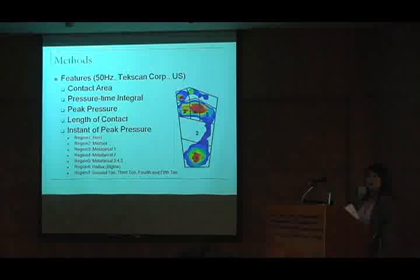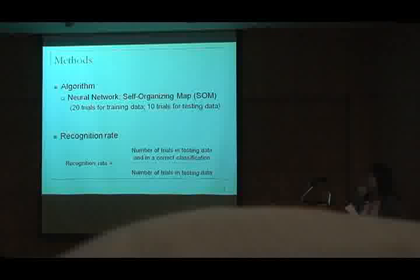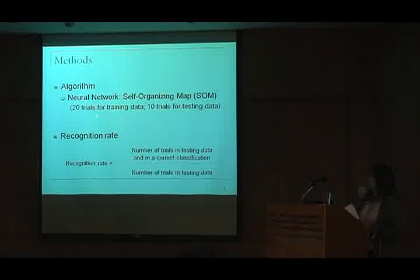Then we're trying to use the self-organizing map neural networks to be our algorithm because this method can cluster itself. So we're trying to use the training data. We're trying to use the 20 trials for training data and 10 trials for testing data. And then we compare the training data and testing data to calculate the recognition rate.